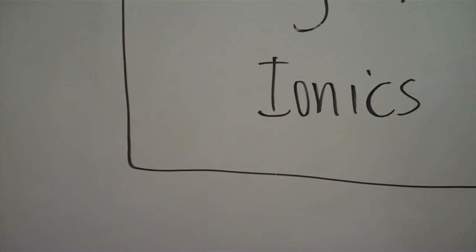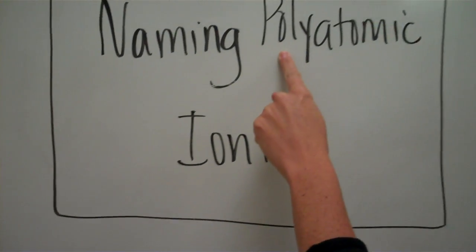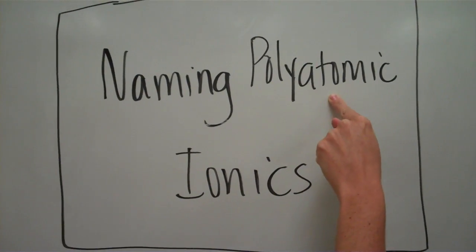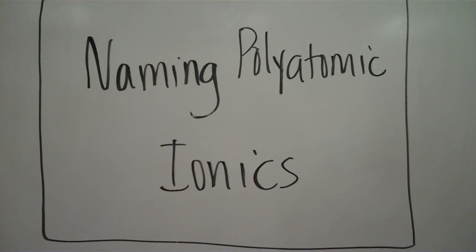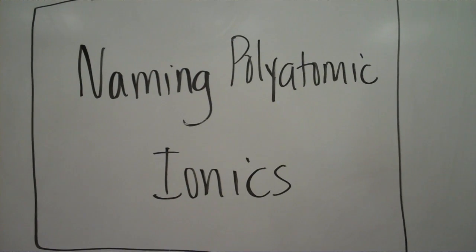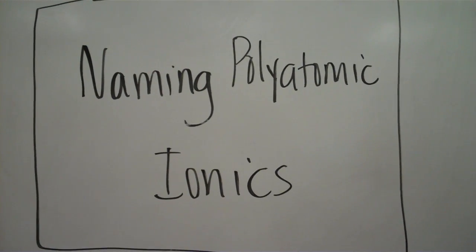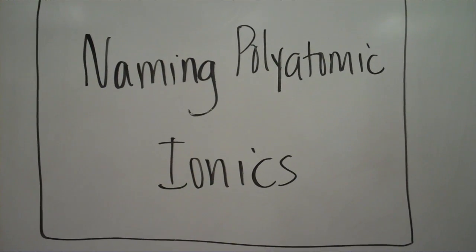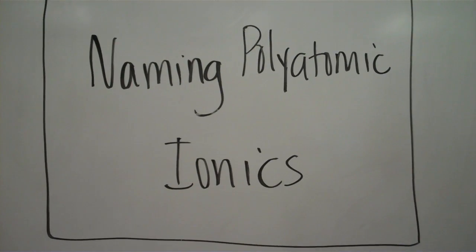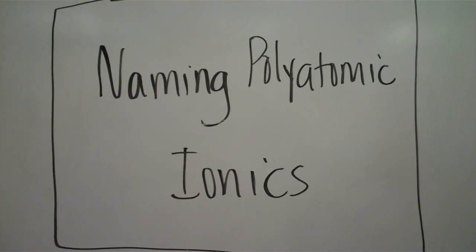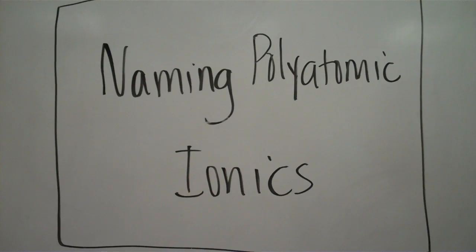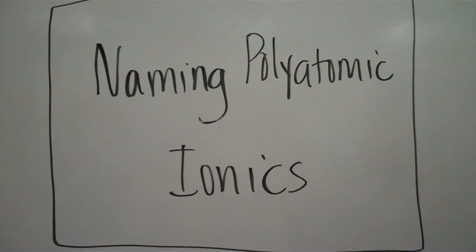It makes sense that the word 'poly,' meaning many, is stuck to the word 'atom.' These are many different atoms — not just one element from the periodic table. They work the exact same way as ionics. The only thing is we have to add some parentheses, and in some cases there's a little trick to reading this part of the table.